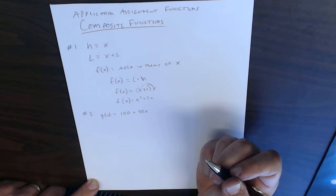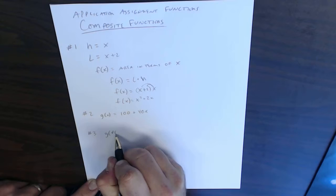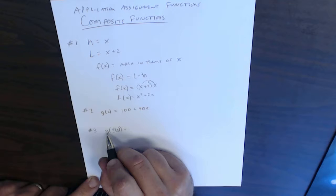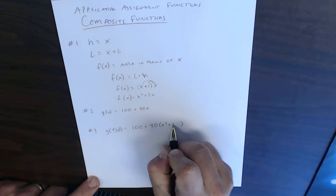we get into our composite functions, and question number 3 asks, and I want to show you the composite functions, we have g of f of x. So g of f of x means I want to take the f of x function and I'm plugging it into the x of the g of x function. So what I'm doing is I'm taking the x and I'm replacing x with x squared plus 2x, and then I'm just simplifying that equation.